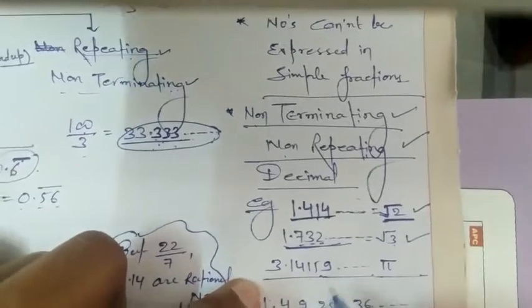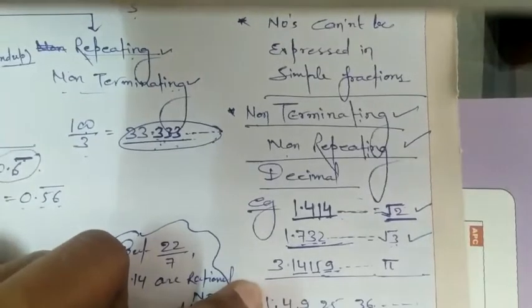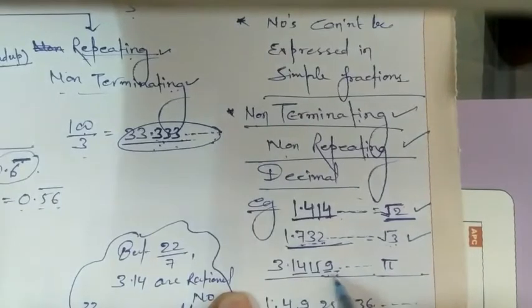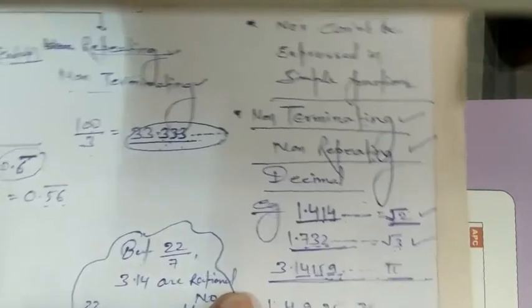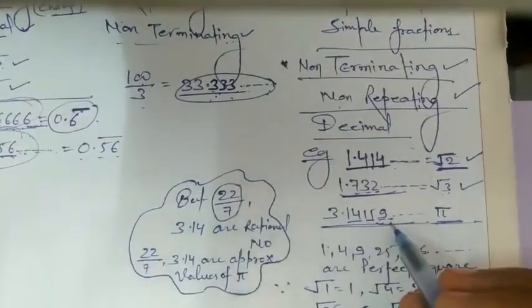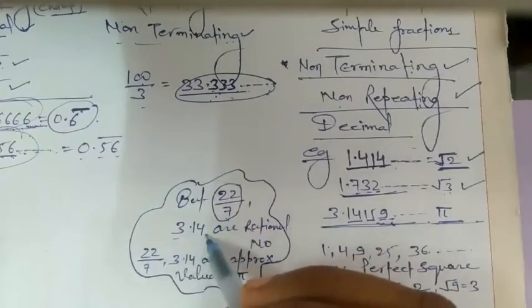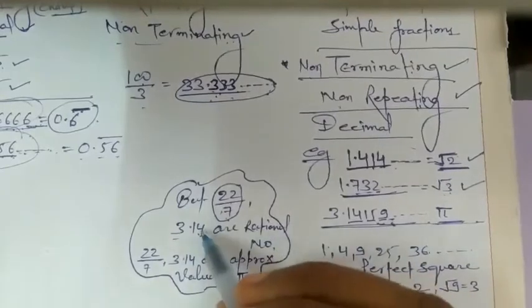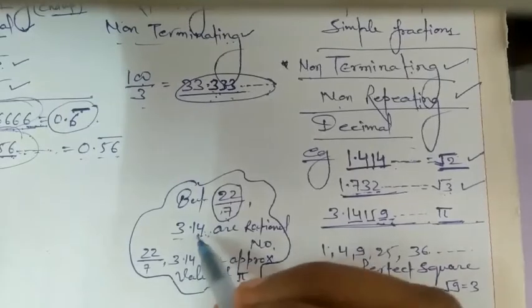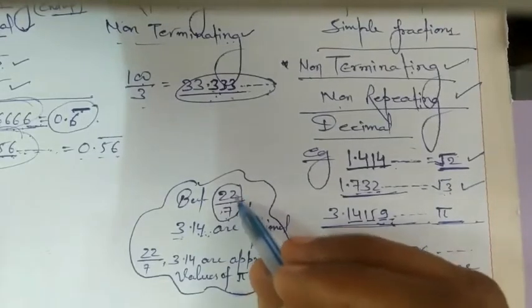Pi — the value of pi is 3.14159 and so on. No pair or block of digits is repeating here, so it is non-terminating and non-repeating — that's why pi is an irrational number. But note: in daily life we use the approximate value of pi as 22 upon 7 or 3.14. These are rational numbers because 3.14 is terminating after the decimal, and 22 upon 7 is in the form of P upon Q.